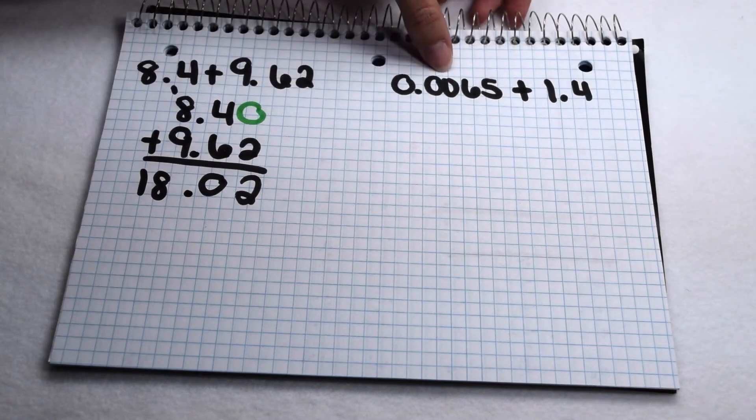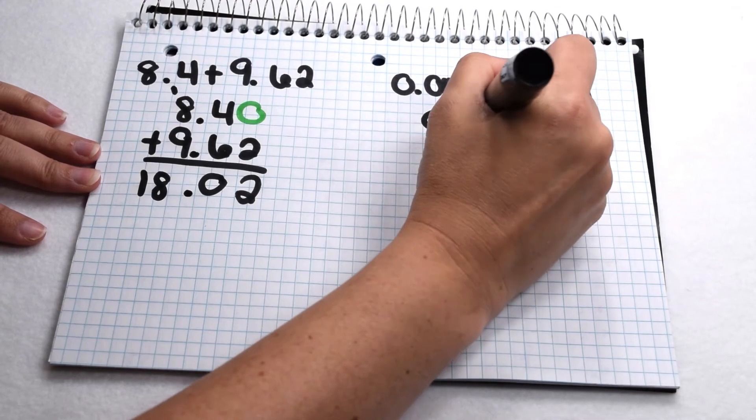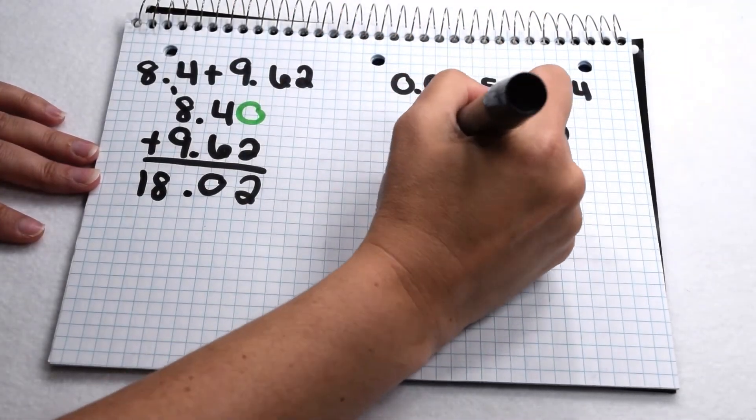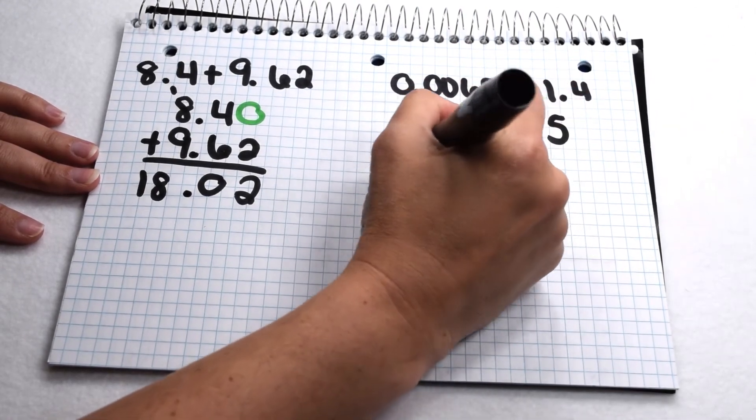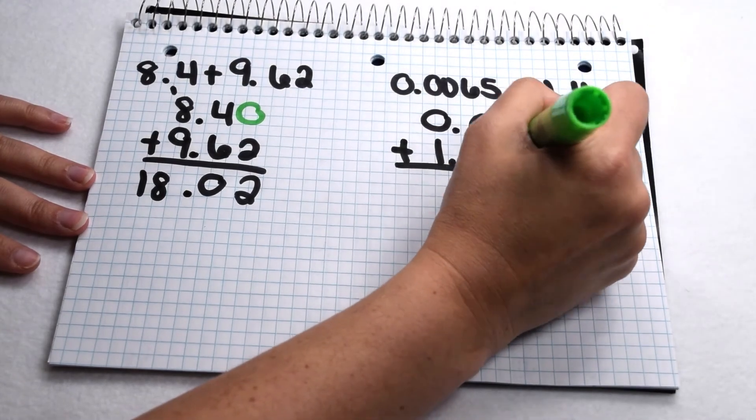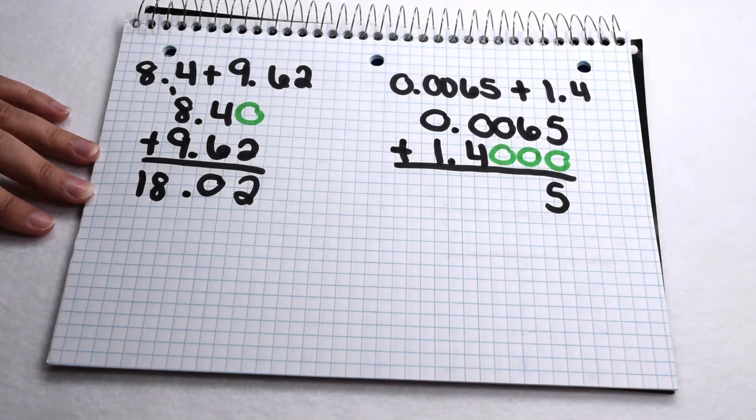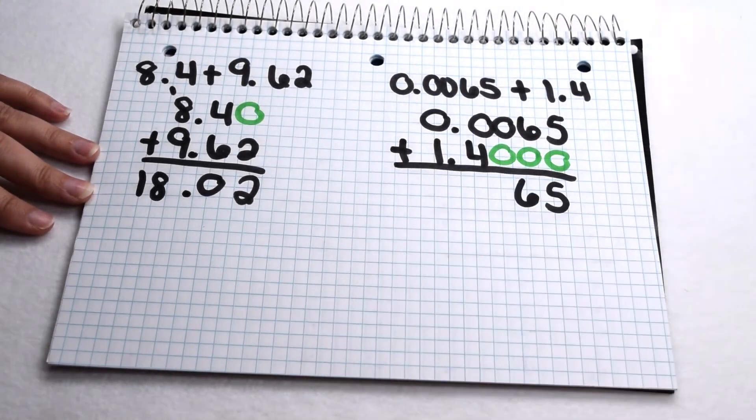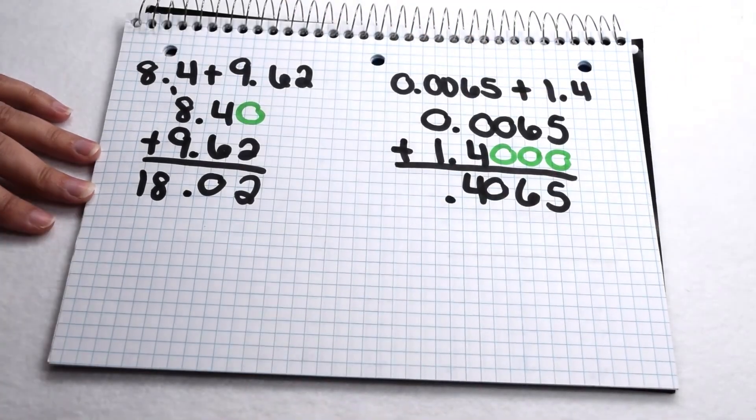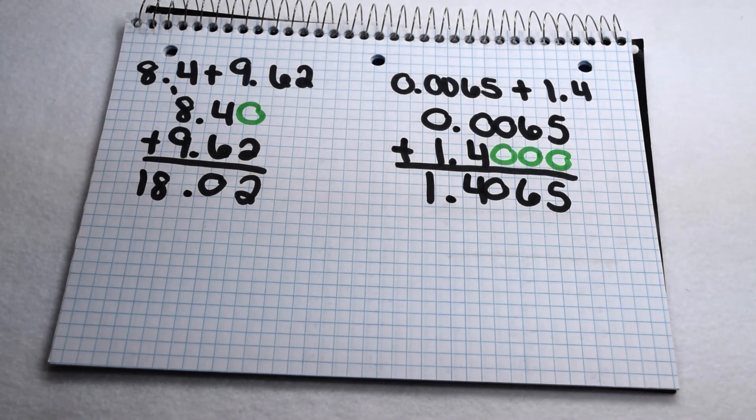Over here we have 65 ten thousandths plus 1 and 4 tenths. I need to pay attention to lining up my place values. So I have my 65 ten thousandths, and to that I need to add 1 and 4 tenths. We can see we have several spots that don't have a value in it, so that's where we fill in our placeholder zeros. Now we can add like normal. 5 plus 0 comes out to simply give me 5. 6 plus 0 gives me 6. 0 plus 0 is 0. 0 plus 4 is 4. Again, my placeholders, or my decimal lines up straight down, and 0 plus 1 is 1. So that comes out to be 1 and 4,065 ten thousandths.